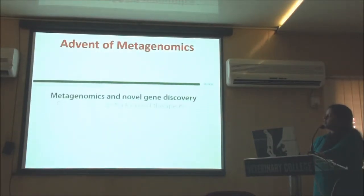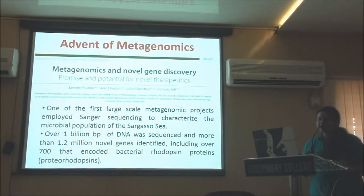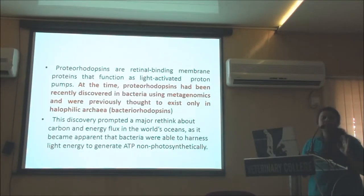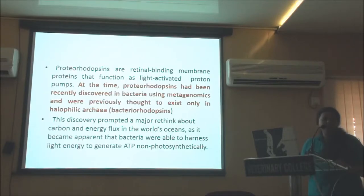The advent of metagenomics started with the Sargasso Sea project, one of the first large-scale projects. It employed Sanger sequencing to characterize the microbial population of the Sargasso Sea. In that study, they characterized over 1 trillion base pairs of DNA and identified more than 1 million genes, including over 700 bacterial rhodopsin proteins. Before this study it was thought that bacterial rhodopsins were present only in archaea, but they discovered they are present in bacteria also. This discovery prompted a major rethink about carbon and energy flux in the world's oceans, as it became apparent that bacteria were able to harness light energy to generate ATP non-photosynthetically.